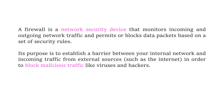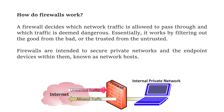Now we can see how the firewall works. The firewall decides which network traffic is allowed to pass through and which traffic is deemed dangerous. It works by filtering out the good from the bad, or the trusted from the untrusted. Looking at this diagram, we can clearly see the purpose of a firewall, where firewalls are intended to secure private networks and the endpoint devices within them, which are known as hosts.